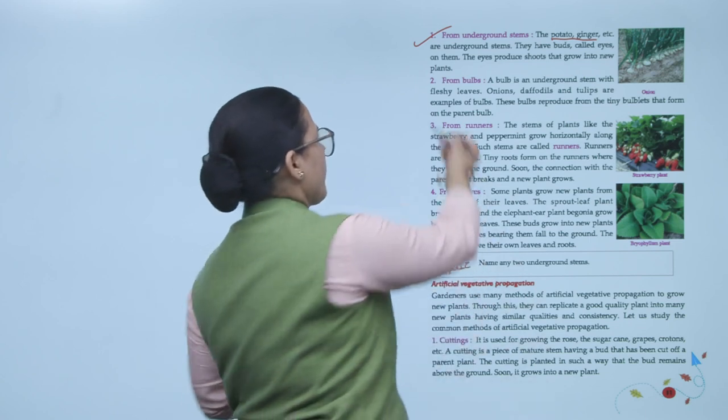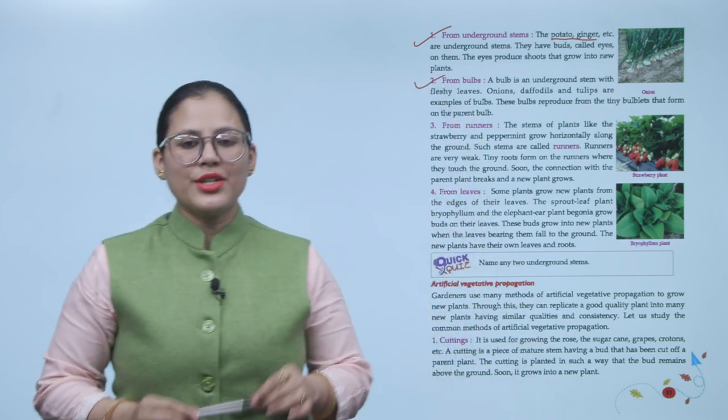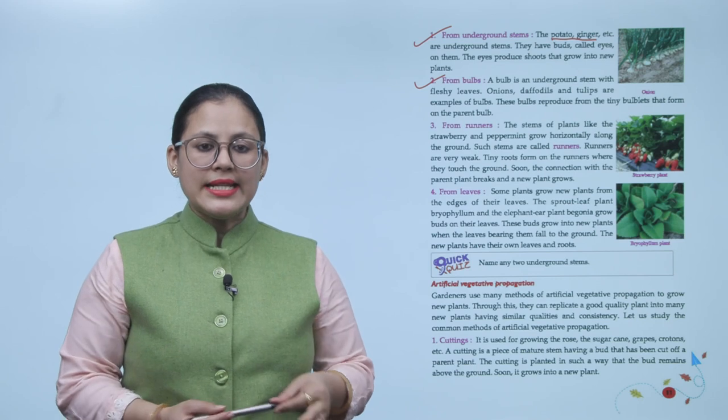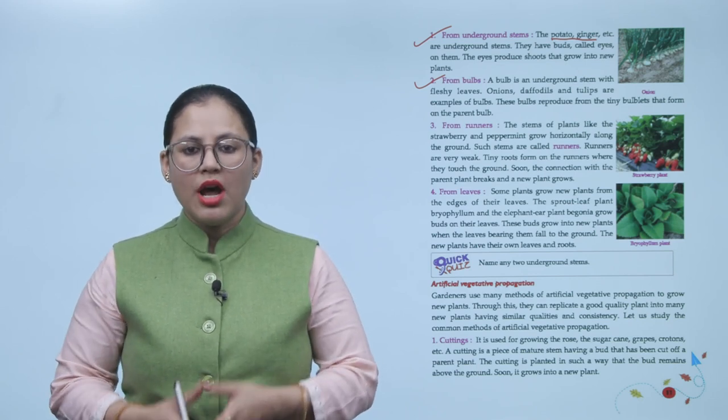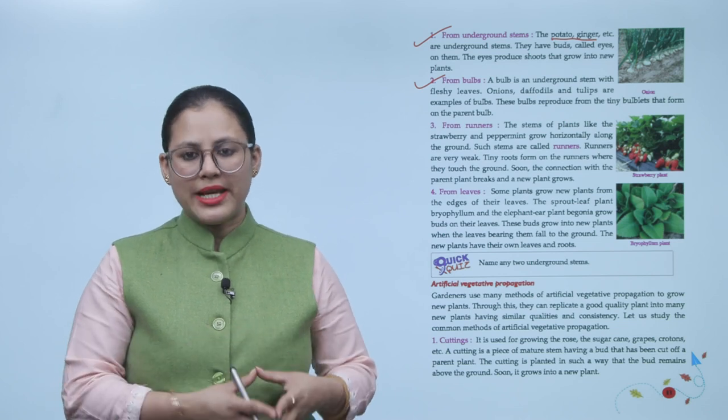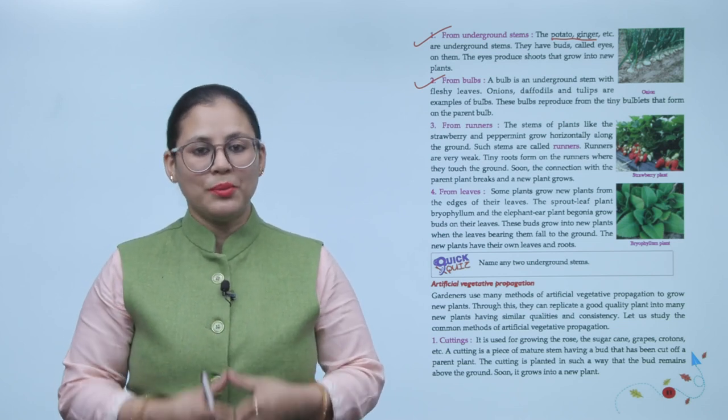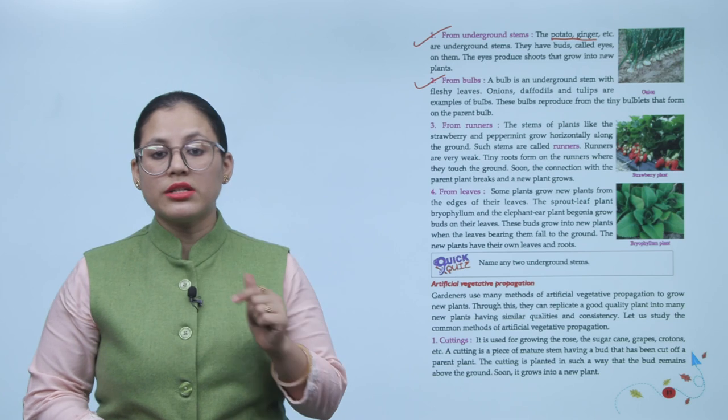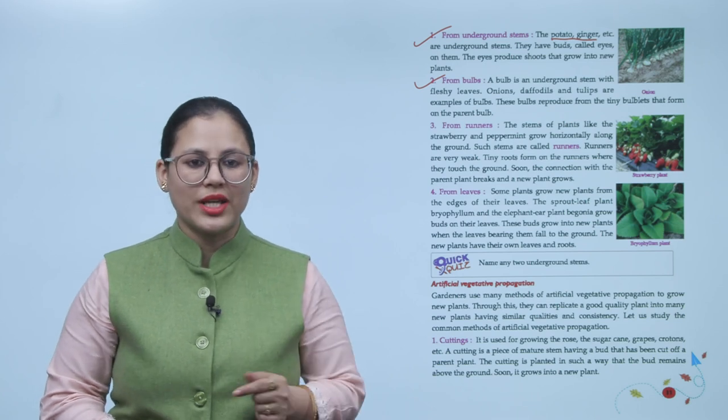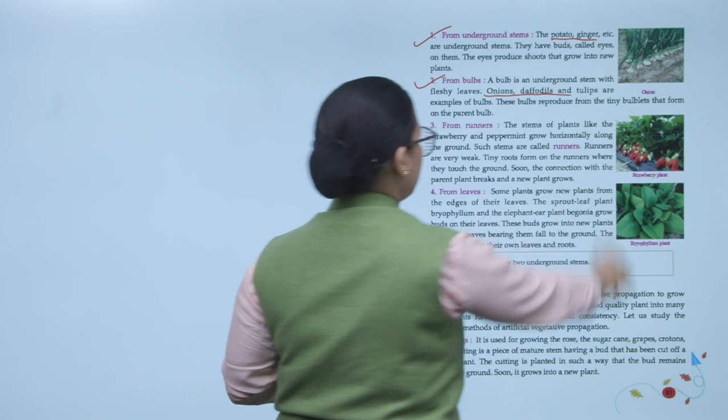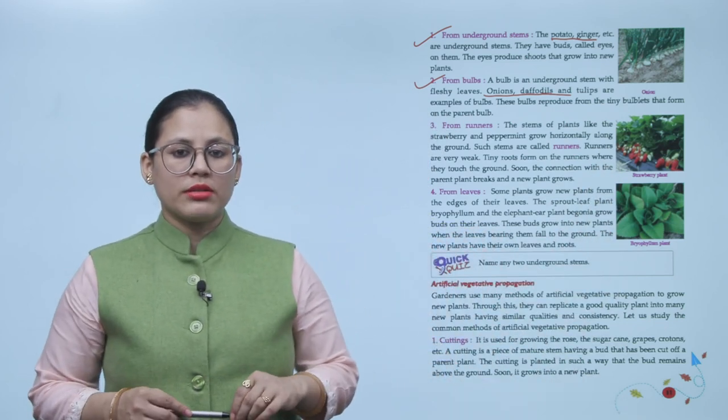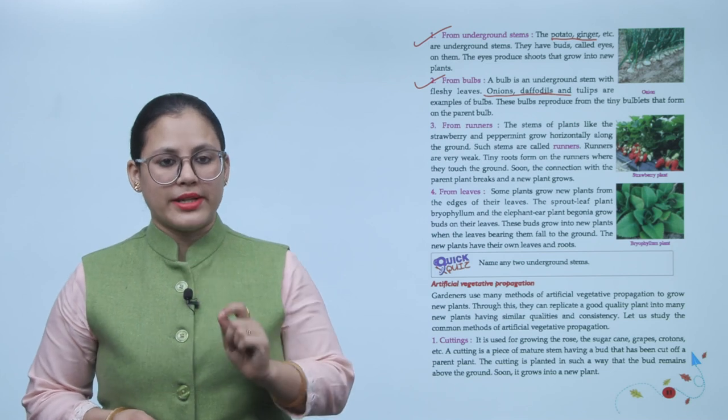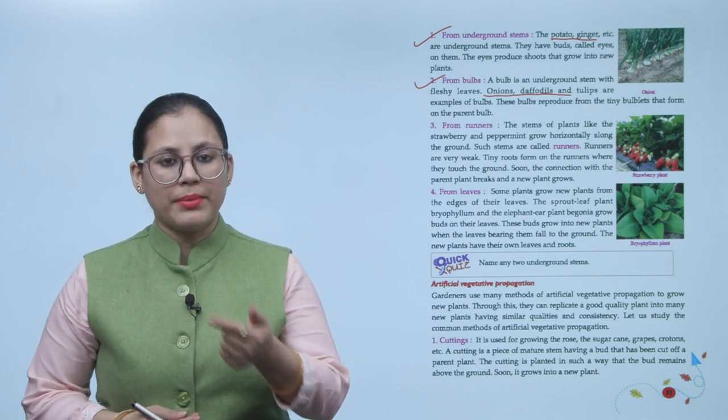From bulbs. A bulb is an underground stem with fleshy leaves. Onions, daffodils, and tulips are examples of bulbs. These bulbs reproduce from the tiny bulblets that form on the parent bulb.